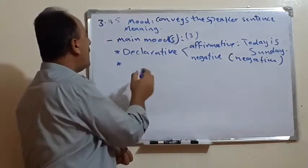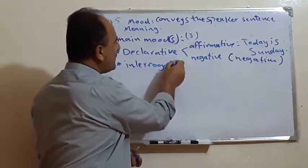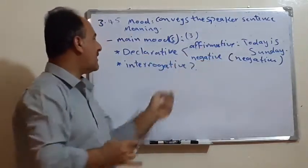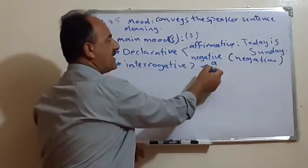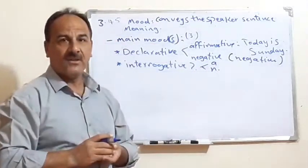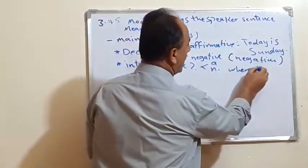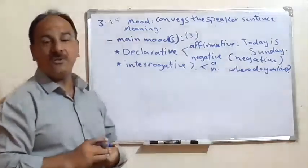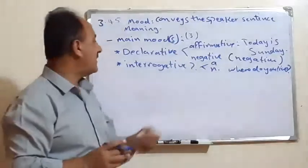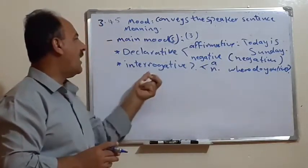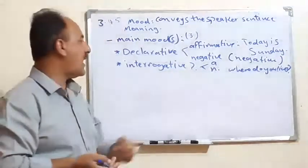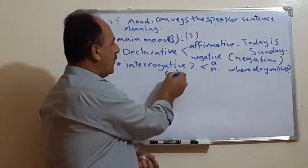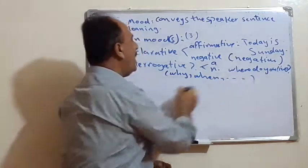The second category of the main moods is what we call the interrogative, which means questions. Again, since we have affirmative and negative, also in interrogative we have affirmative and negative interrogative. For example, 'Where do you live?' — this is interrogative. Or, 'Don't you like playing chess?' — this is negative interrogative. 'How long do you live in Iraq?' or 'Where are you staying?' All these markers used with why, when, where, etc., we use them for the interrogative.